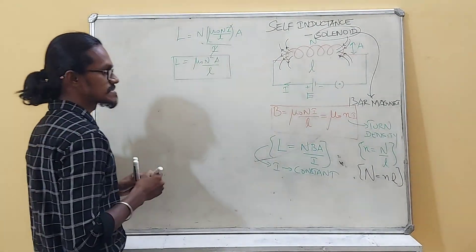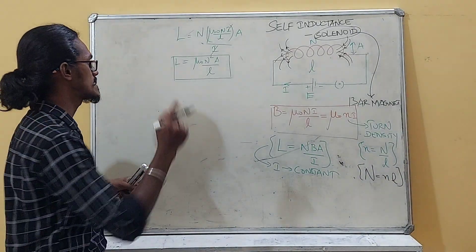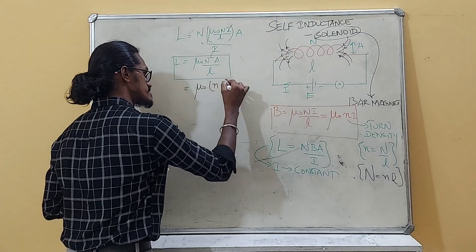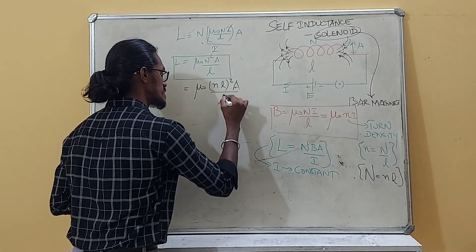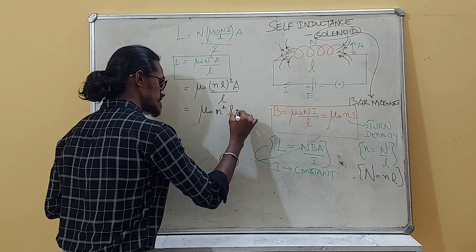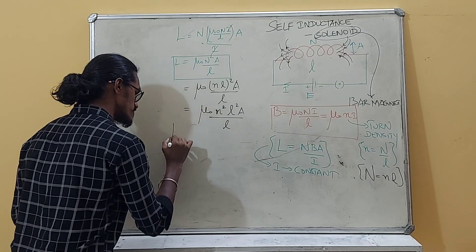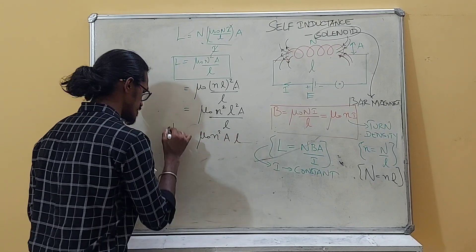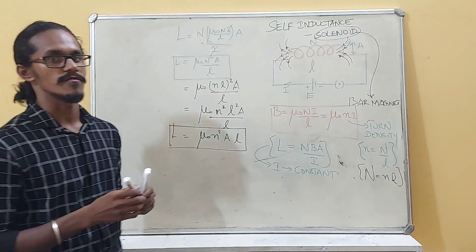Using the turn density relation N = nl, we can re-express self-inductance as L = μ₀(nl)²A/l = μ₀n²lA. Therefore, self-inductance of a solenoid is L = μ₀n²Al, where n is the turn density and A is the cross-sectional area.